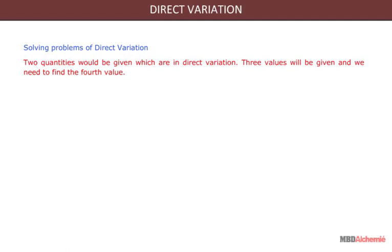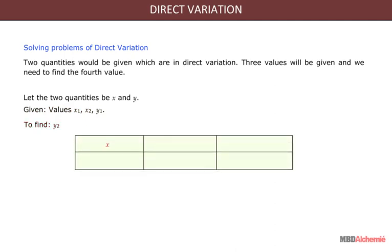Solving problems of direct variation: two quantities would be given which are in direct variation. Three values will be given and we need to find the fourth value. For example, let the two quantities be X and Y. Given values X1, X2, and Y1, we need to find Y2. Since X and Y are directly proportional, then X upon Y equals X1 upon Y1 equals X2 upon Y2.